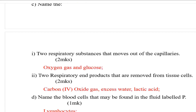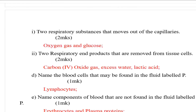Name the two respiratory substances that move out of the capillary. Those are oxygen gas and glucose. Name the two respiratory end products that are removed from the tissue cell. Those are carbon dioxide gas and excess water.